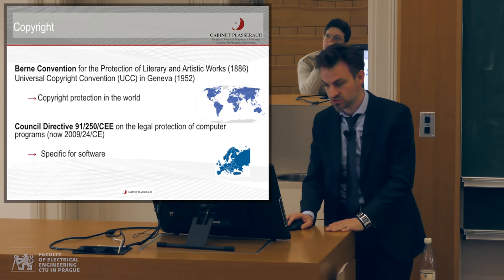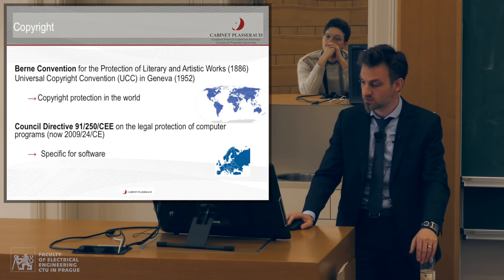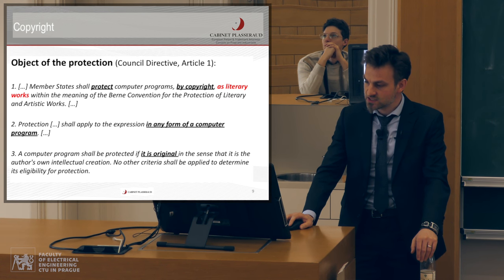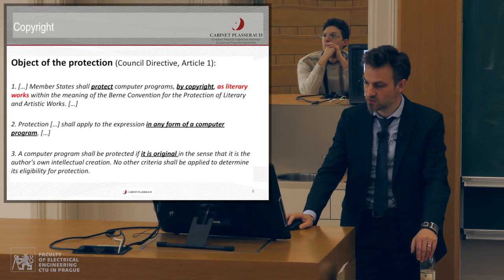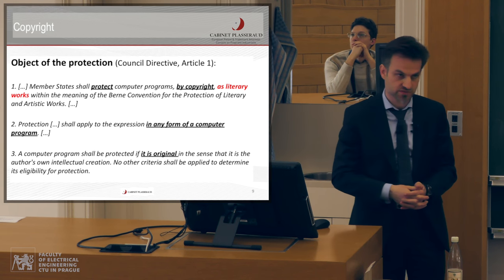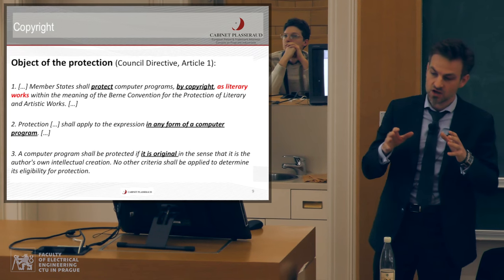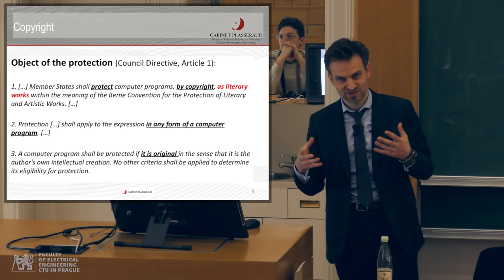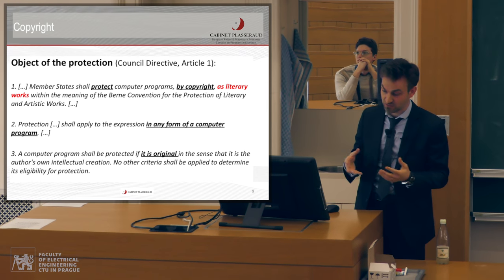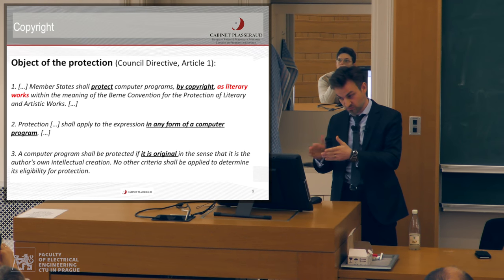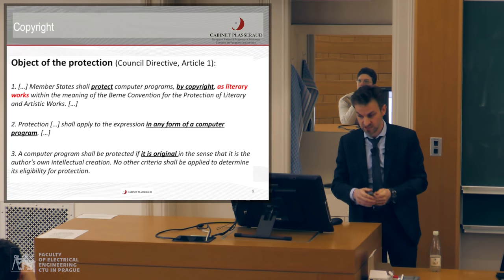The Council Directive refers to the Berne Convention in order to provide specific protection to software. The Council Directive, Article 1, says that member states shall protect computer programs by copyrights as literary works within the meaning of the Berne Convention for the protection of literary and artistic works. Then when we look at a computer program, we look at it like a poem — it's a set of lines, like Shakespeare — and it should be protected by copyrights. This is exactly what Article 1 says.